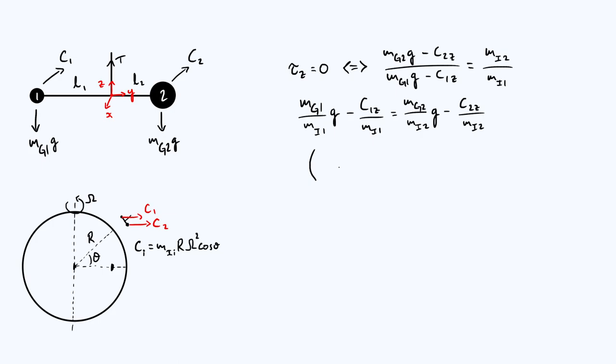So mg2 divided by mi2 times g, and then minus c2z divided by mi2, like that. We can then group some of the terms that look similar together, put them on the same side. By that, I mean you've got two terms which are proportional to both the mass ratio, gravitational to inertial, and to the gravitational field strength g. So we could factor out a g, put them on the same side, and get mg1 over mi1 minus mg2 over mi2 times field strength g, and that would have to be equal to c1z over mi1 and then minus c2z over mi2.